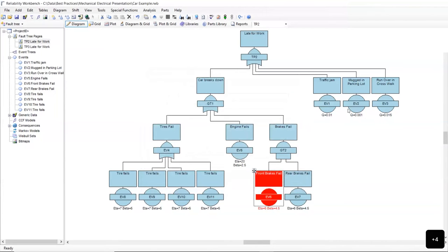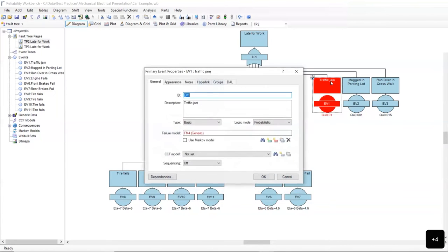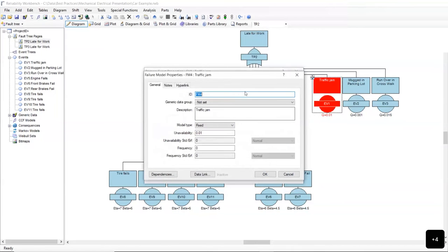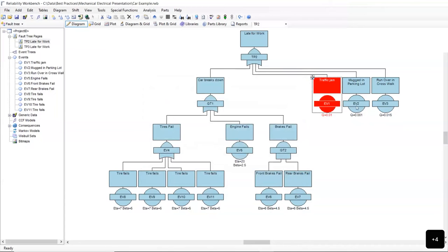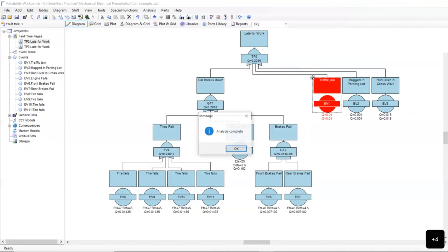These other miscellaneous events that could happen, I did not select a Weibull curve on those. It's a fixed unavailability. 1% on traffic jam. 0.1 on being mugged and 1.5 on being run over in the crosswalk. So that's all entered in there. I just have to go up here and hit the perform analysis.